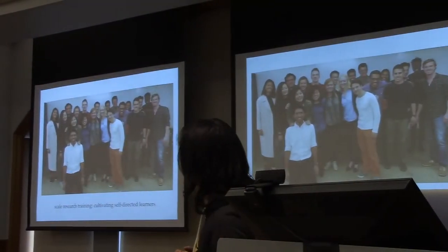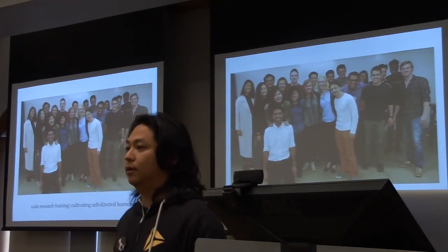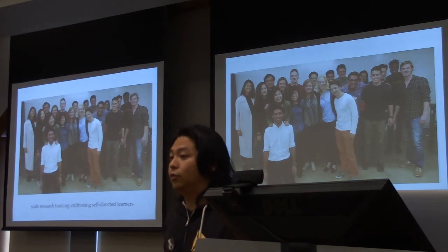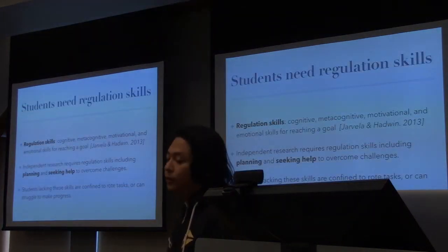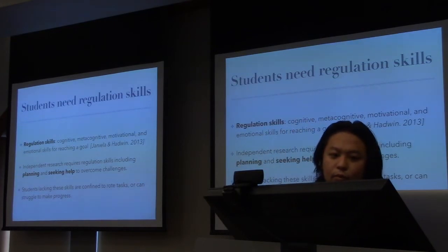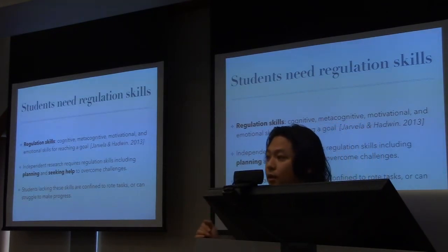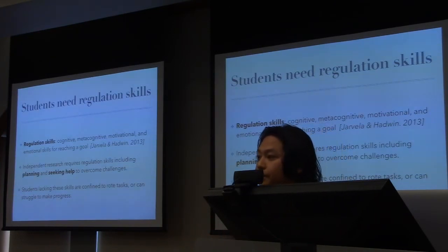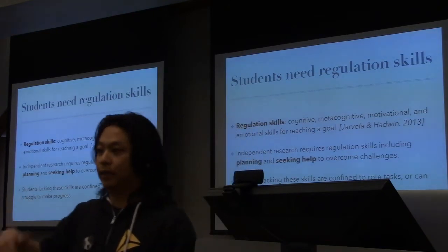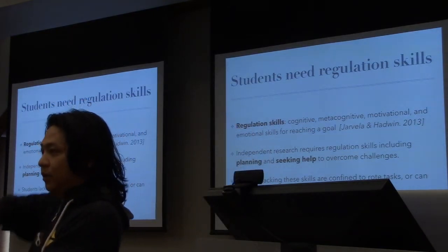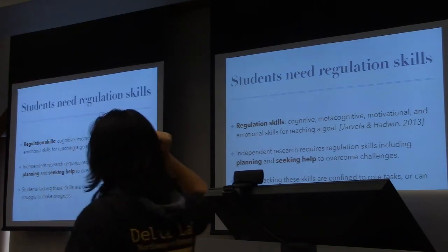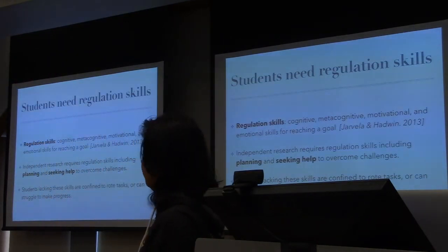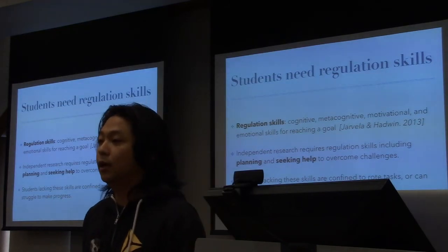I'm going to move on to the next part: scaling research training, and in particular this idea of cultivating self-directed learners. What we found is that if you want students to become self-directed so they can do independent research, they're going to need regulation skills. The term comes from psychology and later the learning sciences. The core idea is: for some complex goal you want to reach, what are all the cognitive, metacognitive, motivational, and emotional skills you would need to reach that goal?